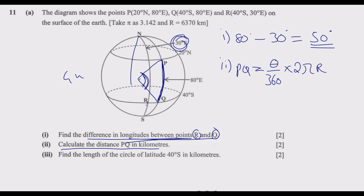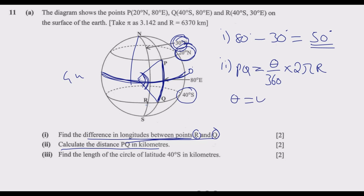To find the angle between P and Q: P is in the northern hemisphere at 20 degrees north, and Q is in the southern hemisphere at 40 degrees south. Since one is north and one is south, we treat the equator as 0 degrees and add the two latitudes. So the angle is 40 plus 20, which gives us 60 degrees — this is the difference in latitude.